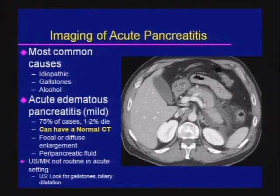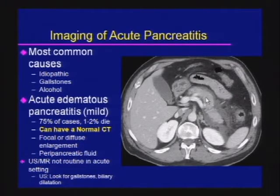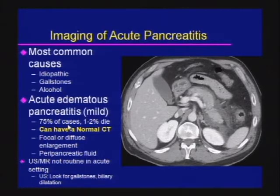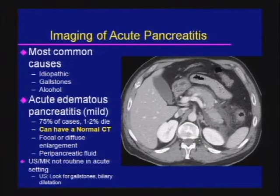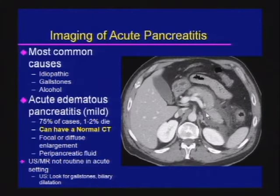The preferred terminology when the pancreas is enhancing but with significant peripancreatic fluid is acute edematous pancreatitis — the vast majority of cases, with a mortality of about 1–2%. These patients can have normal CTs; if abnormal, you typically see a focal or diffusely enlarged pancreas and peripancreatic fluid. Ultrasound is not very good for evaluating pancreatitis due to obscuring gas, although most patients get an ultrasound afterward to look for gallstones.